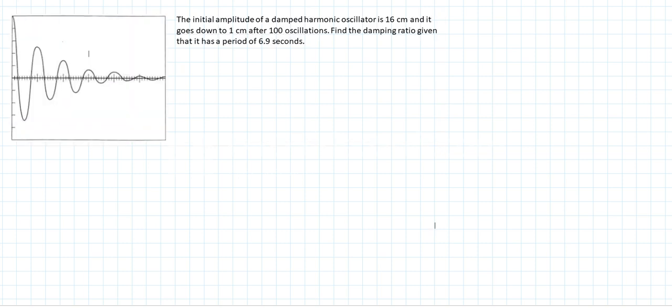The problem statement is as follows: the initial amplitude of the damped harmonic oscillator is 16 centimeters and it goes down to one centimeter after a hundred oscillations. Find the damping ratio given that it has a period of 6.9 seconds.